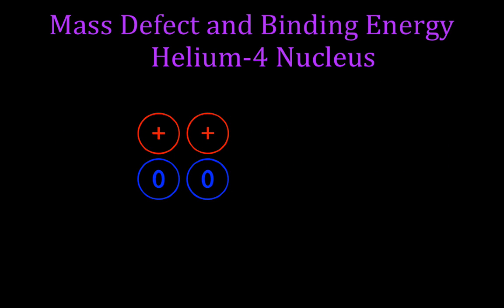So, a little introduction here. We have a mass defect and binding energy problem for a helium-4 nucleus. Helium is element number two, so it has two protons, but it's helium-4, so we know it also has two neutrons. Those two things together make up the helium-4.